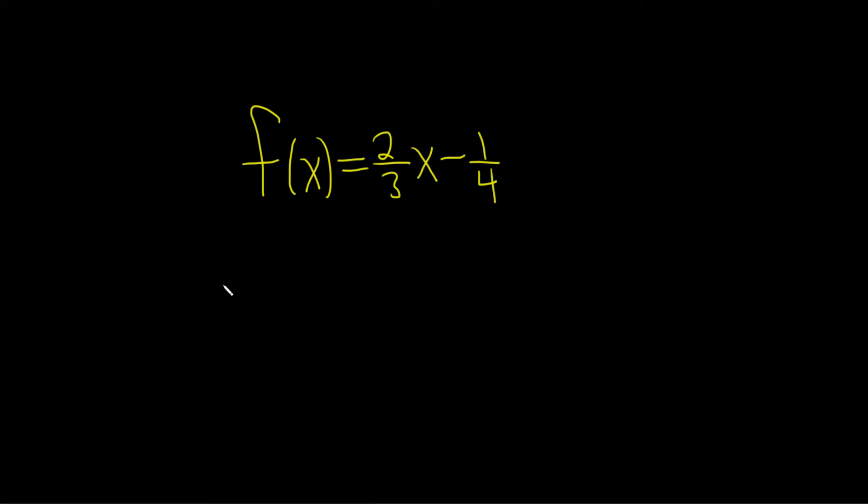In this problem, we're going to find the inverse of this function. When you're finding the inverse of a function, the very first step is to replace your f(x) notation with y. So step one is to let y equal f(x). So y equals 2/3 x minus 1/4.